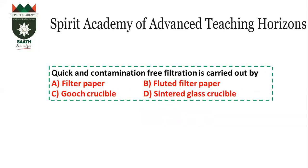Question number 1: Quick and contamination-free filtration is carried out by filter paper. However, with filter paper, the filtration can be very hard due to surface area. Contamination-free filtration is better carried out by Gooch crucible and Sintered glass crucible. This means the appropriate answer is Sintered glass crucible, option D.